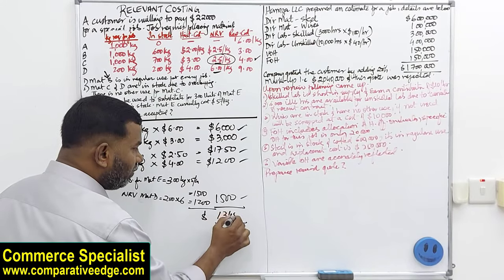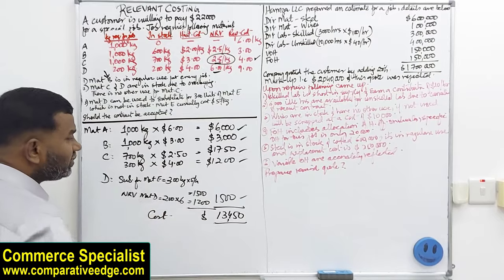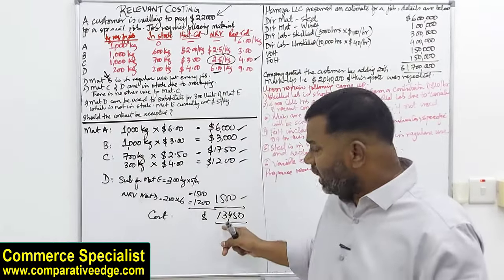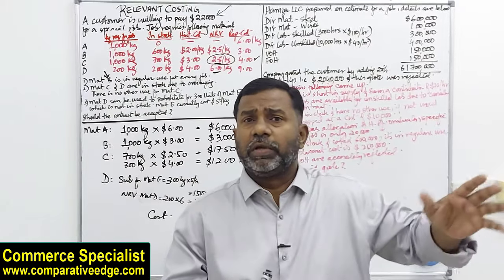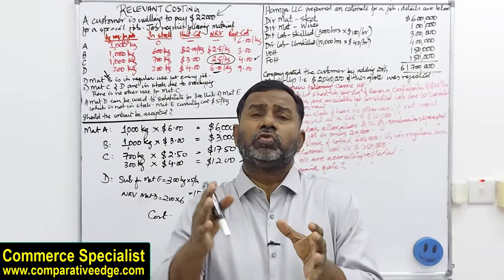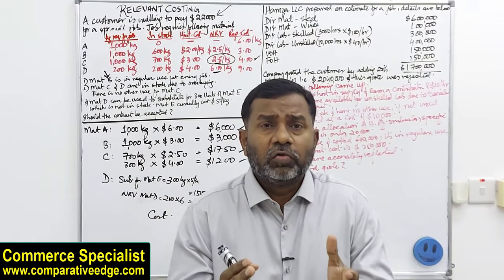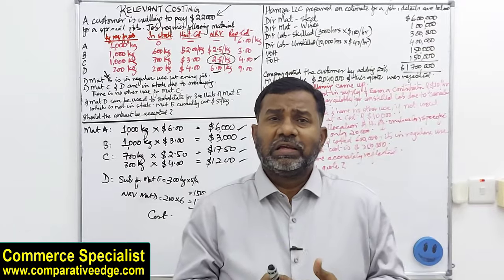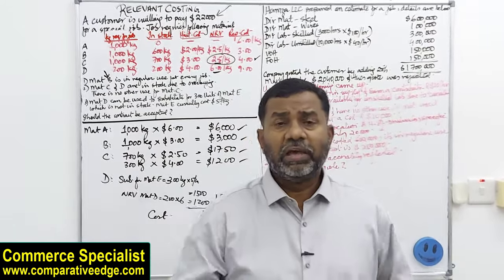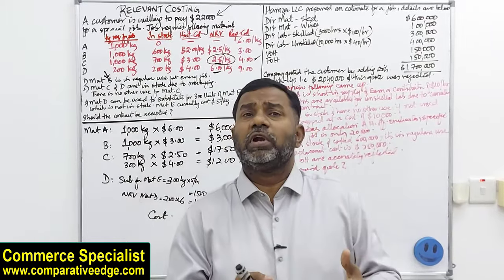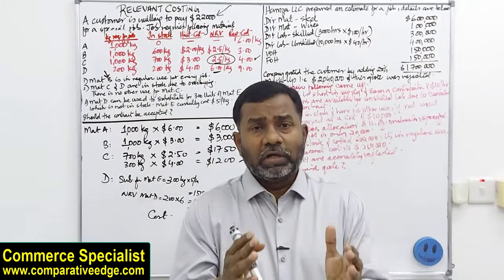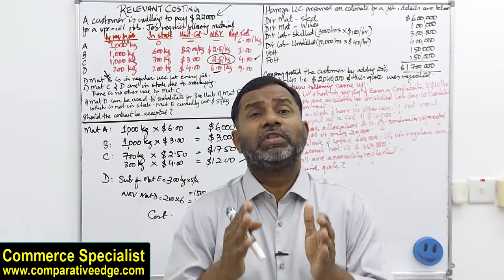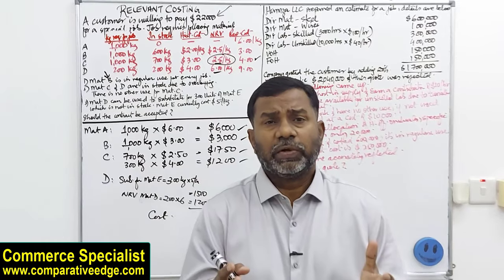Adding all these up gives a total relevant cost of thirteen thousand four hundred and fifty dollars. The customer is willing to pay twenty-two thousand dollars, so it is very much feasible. The aim is not to quote the highest or lowest possible price, but to quote based on our relevant cost — what it costs us specifically. Our costs are not the same as a competitor's; each business has its own relevant costs.